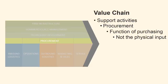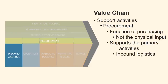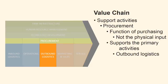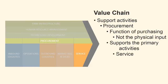Procurement refers to the function of purchasing, not the physical input. Procurement supports all the primary activities. It may include the establishment of procurement routines for the purchase of raw materials for inbound logistics. There must also be negotiations about purchasing of energy and service to the machines in operations, buying new cars for delivery of goods as part of outbound logistics, a procedure for the purchase of advertising materials in marketing and sales, and new cars for service technicians in service. Effective procurement routines can greatly influence purchase costs and thereby contribute to higher profits.